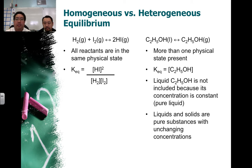There is homogeneous equilibrium and heterogeneous equilibrium. Homogeneous equilibrium is when all the states of matter for the reactants and products are identical. Heterogeneous is when they're not equal.